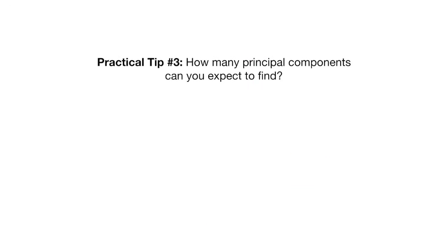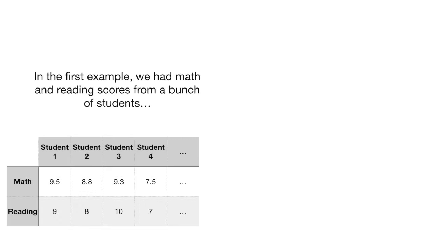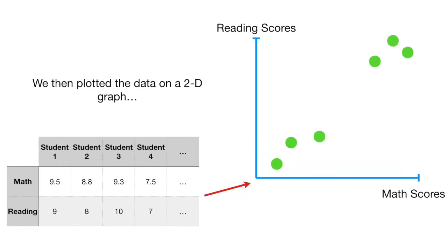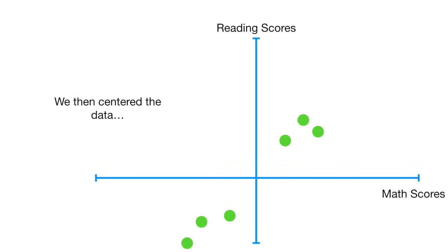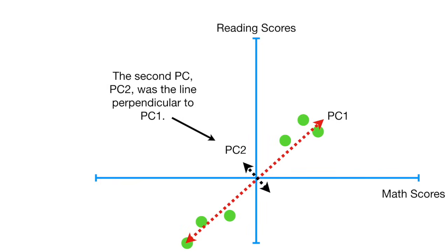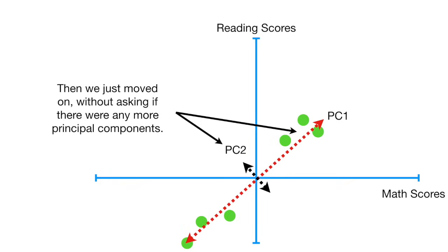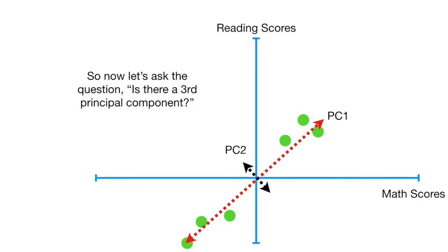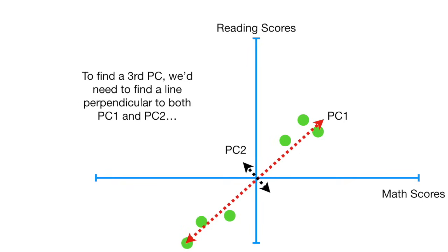Practical tip number three: how many principal components can you expect to find? In the first example, we had math and reading scores from a bunch of students. We plotted the data on a two-dimensional graph, centered the data, and then found the best-fitting line that goes through the origin — this is PC1. The second PC, PC2, was the line perpendicular to PC1. Then we moved on without asking if there were any more principal components. So now let's ask: is there a third principal component? To find a third PC, we'd need to find a line perpendicular to both PC1 and PC2, and in two dimensions, that's not possible. So the answer is no.